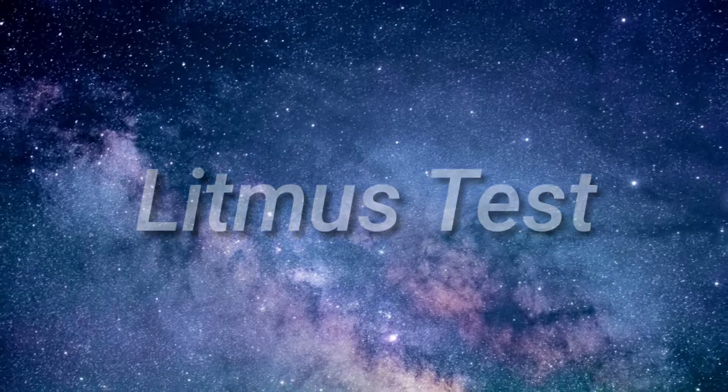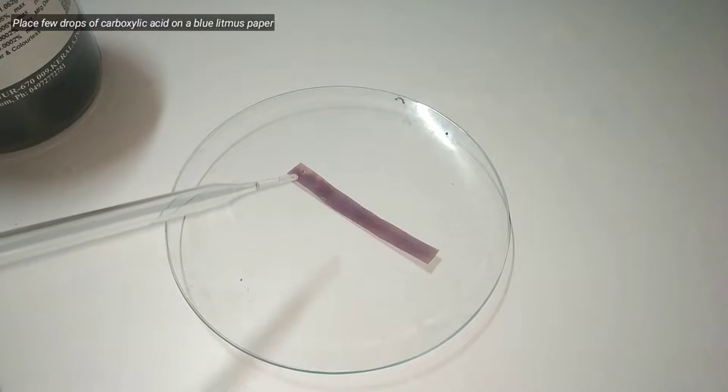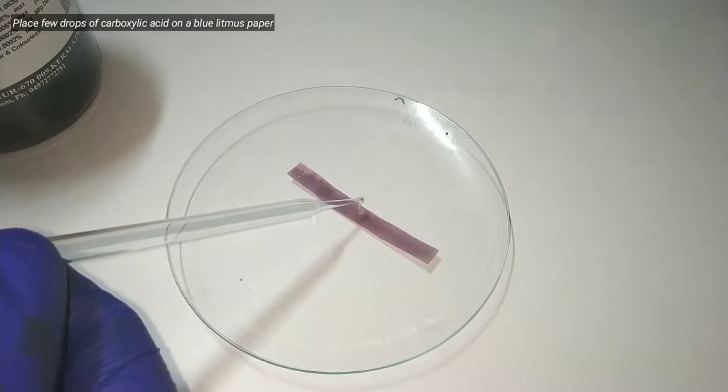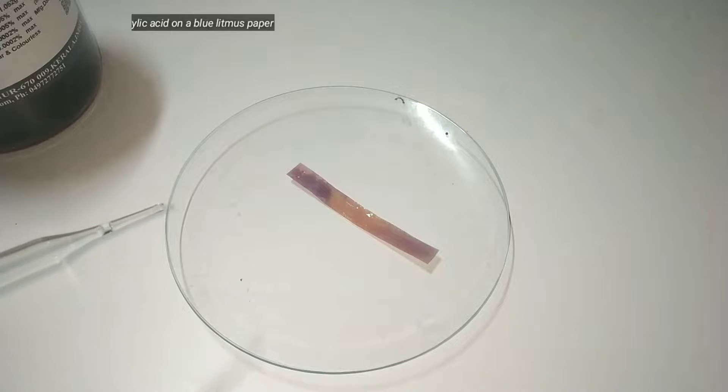Let us start with the litmus test. When carboxylic acid is dropped on blue litmus paper, it turns red, indicating that the compound has acidic properties.